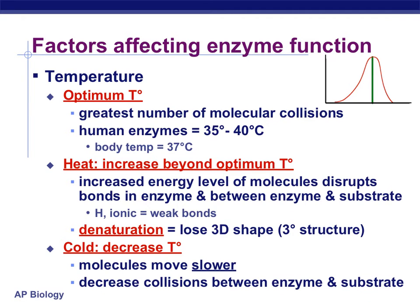The temperature at which enzymes are functioning also has a great effect on their function. All enzymes have an optimum temperature — this is where you'll have the greatest number of molecular collisions between the substrate and the enzyme. For humans, it's 35 to 40 degrees Celsius; body temperature is about 37 degrees Celsius. Heat will, to a point, increase the activity, as molecules will be in motion at a higher rate. But if too much heat is added, you get a denaturing of the enzyme — it loses its 3D shape, called the tertiary structure of the protein.